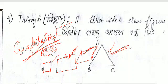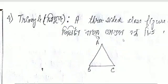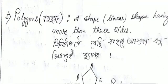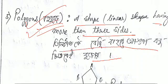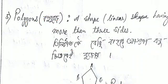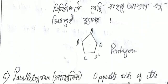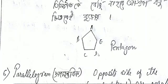This is a rhombus stroke and quadrilateral. Next is the polygon. A polygon is a shape having more than three sides.